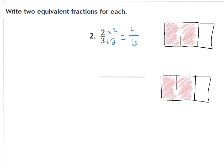I drew a model of 2 thirds — I have 2 parts shaded out of 3. Now I have the same model of 2 thirds, but I'm going to draw a line down the middle horizontally. So now instead of 2 thirds, I have 1, 2, 3, 4 parts shaded out of 1, 2, 3, 4, 5, 6. So here is my equal fraction to 2 thirds: 4 sixths.